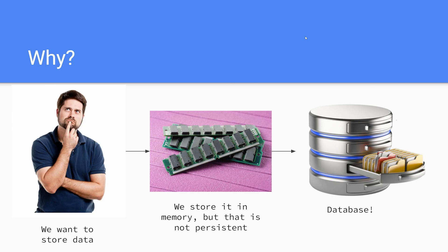So why do we want to use an SQL database? What is the use case? Whenever you have a plugin you want to store data, and the most basic way is to store it in variables or data structures. For example, if you're storing information on each player you can make a hash map where the key is the player's UUID and the value is their data. The problem is that memory is not persistent — it gets wiped whenever the server restarts or reloads. So if you want persistent data, you'd want to use a database.